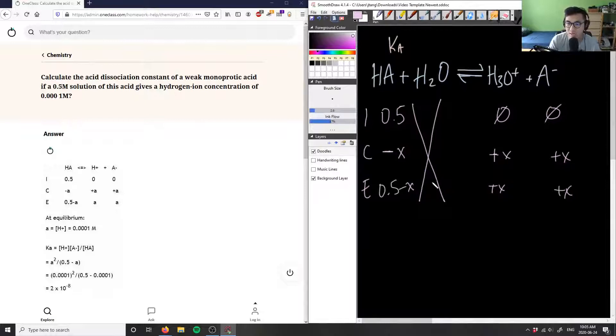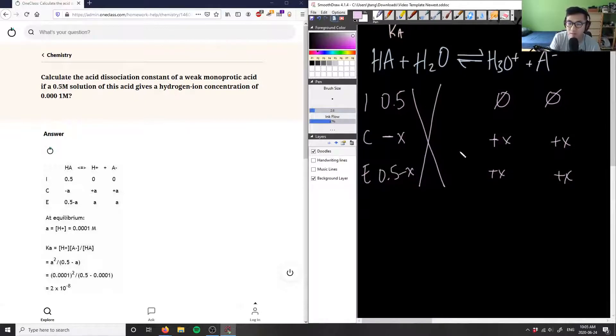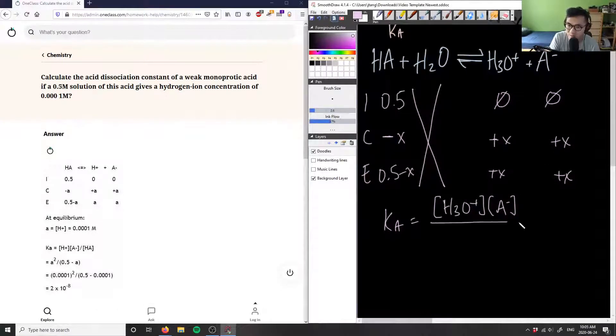And now what we can do is we can actually set up our Ka expression. We can say our Ka is simply equal to our concentration of products over our reactants. So we have H3O+ times A- here divided by HA. And the reason again why we don't put water as our concentration here is because water is in liquid form and doesn't contribute to our equilibrium expression.